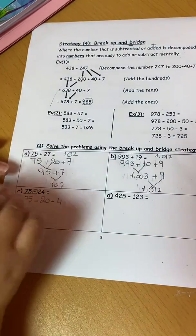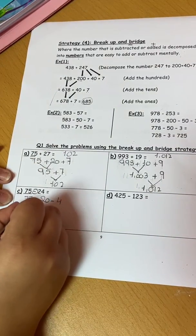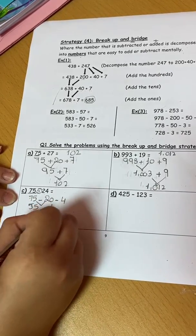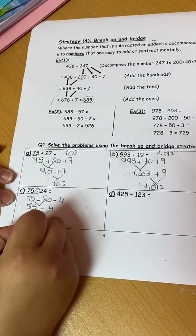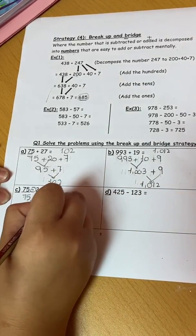I will use the same sign that is written here. So here 75 minus 20 is 55 minus 4. Then 55 minus 4 I got 51. So the answer is 51.